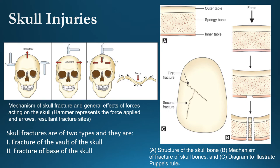According to Puppe's rule, a later fracture does not cross a pre-existing fracture line but terminates upon reaching the earlier fracture line. This rule is also applied to glass fractures. Skull fractures are classified into fracture of the vault of the skull (top part) and fracture of the base of the skull.